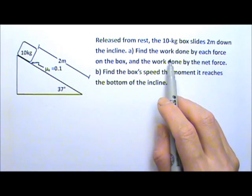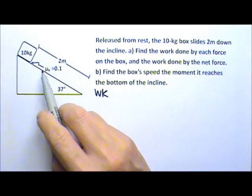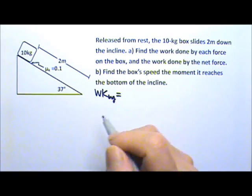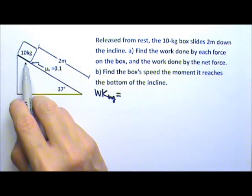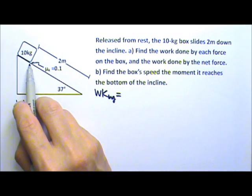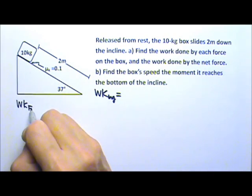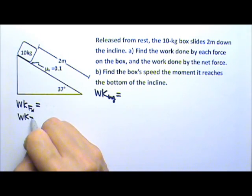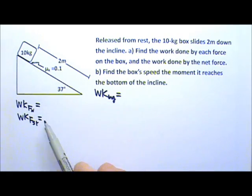We want to find the work done by each force on the box. There's the non-contact force Mg and there is the contact force from the incline surface. The contact surface gives us normal force and friction. The box is not touching anything else, so this is it.